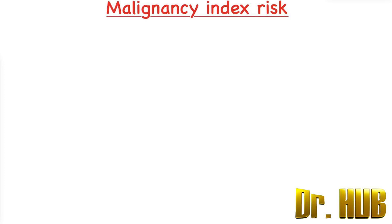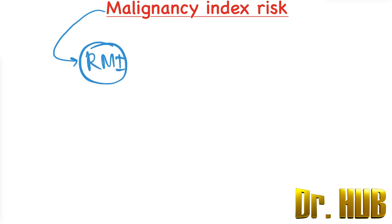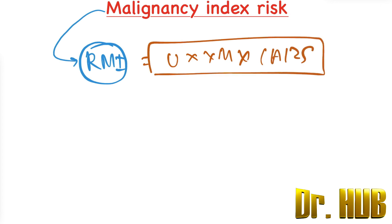Hey guys, this is Dr. Hub. Today we are looking at the malignancy index and its risks. The Risk of Malignancy Index is known as the RMI, and it is equal to U into M into CA-125. Let's break this down. U stands for the ultrasound score.